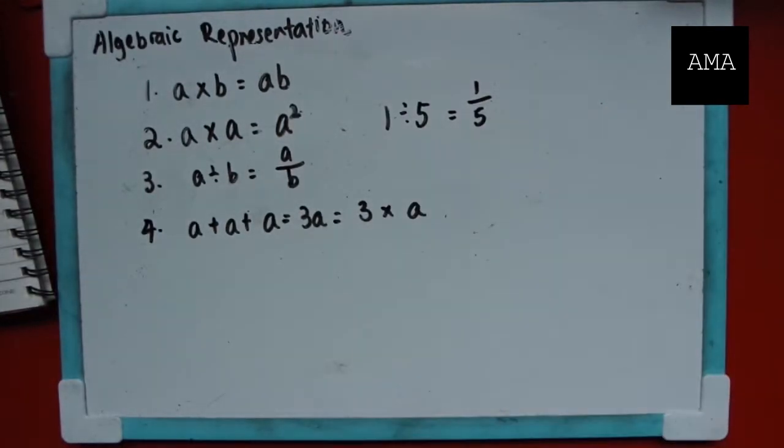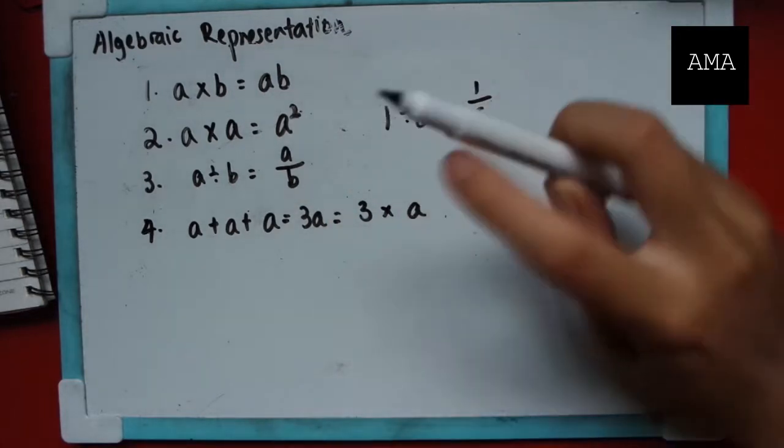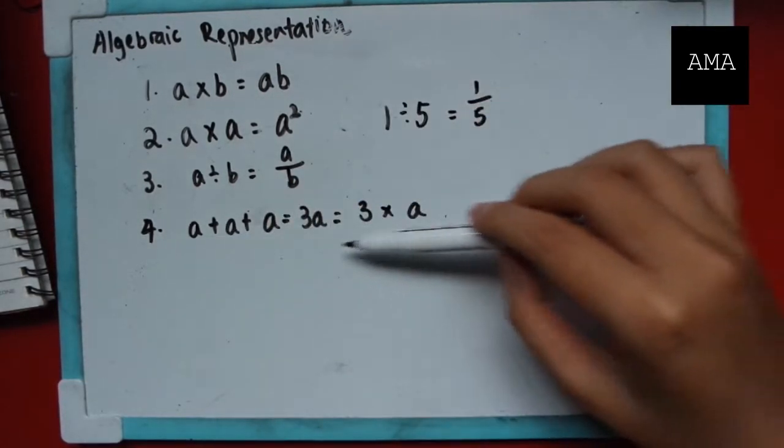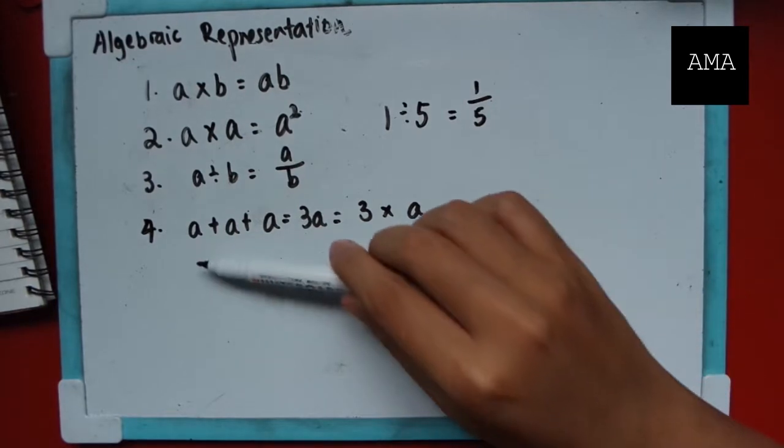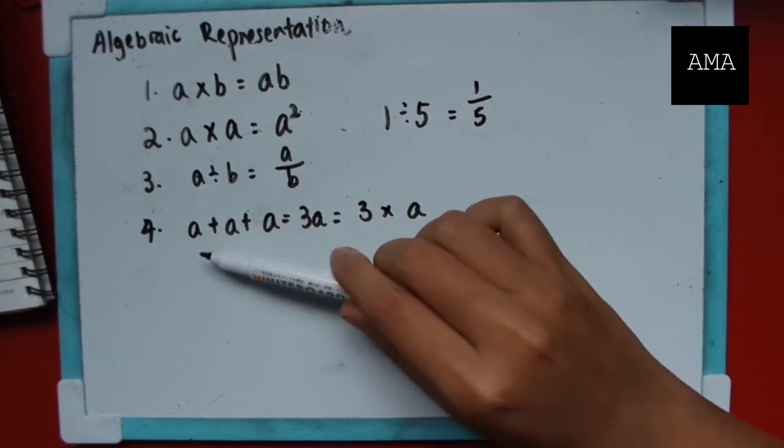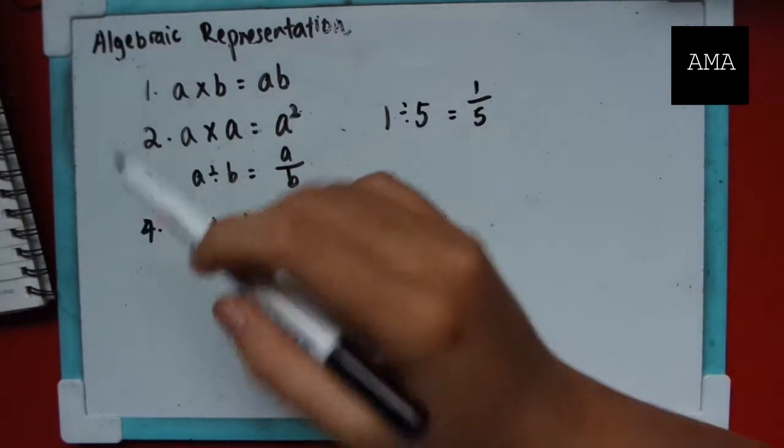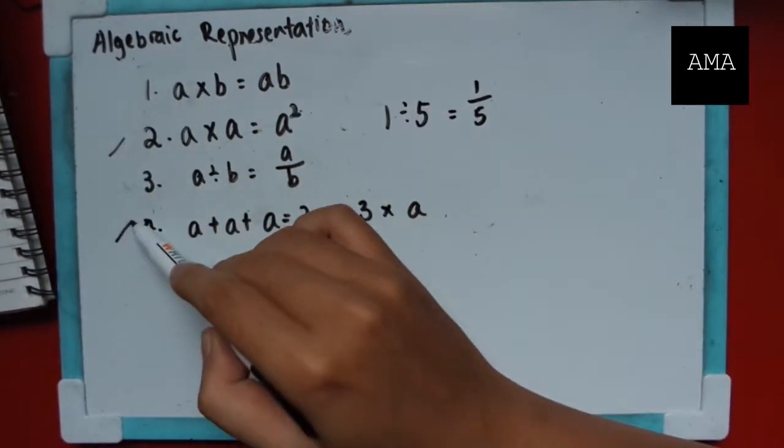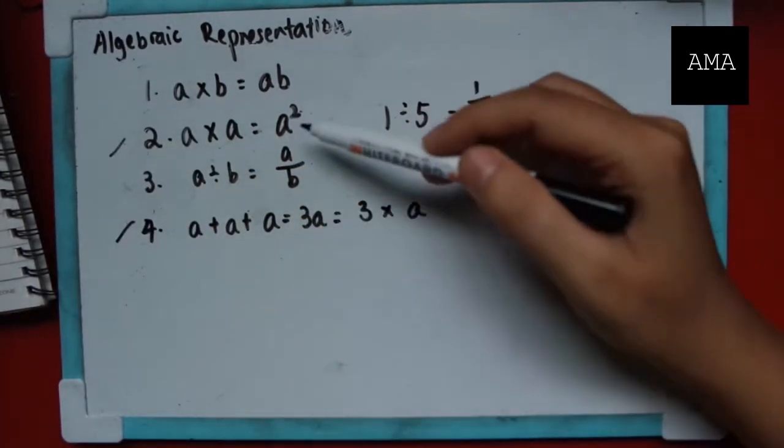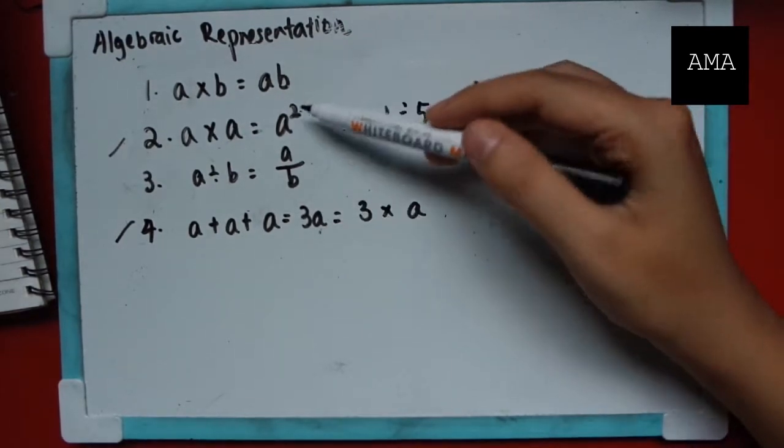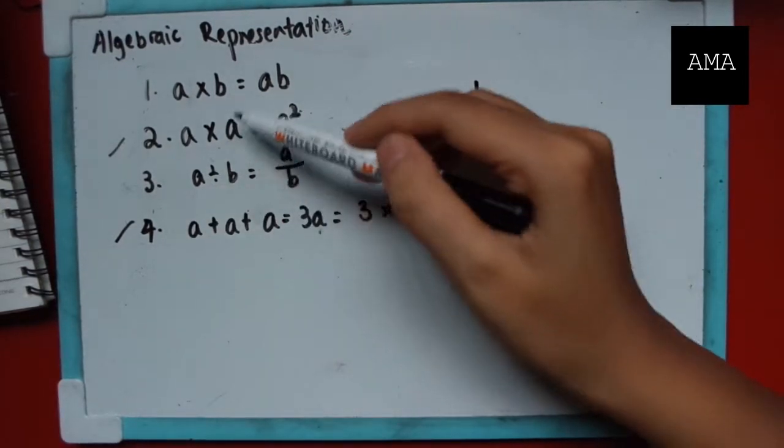Four is important. They are all kind of important, but four, I think, is one of the more important ones. The thing here is, you know that a plus a plus a is 3a. So sometimes you will get confused between this one and this one. So make sure you can identify them. This is addition and this is multiplication.